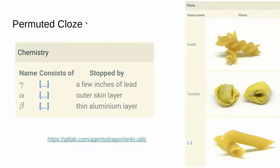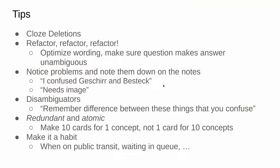It also supports LaTeX, so you can use it very nicely for mathematics — definitions, theorems. I also made a thing called 'permuted cloze,' which I use to memorize things I confuse. For example, I used to not be able to remember what type of radiation alpha, beta, and gamma are. Every time you see the card it randomly permutes the rows, so you see a different order and must remember which is which. Gamma radiation consists of photons, beta of electrons or positrons, and alpha of helium nuclei.